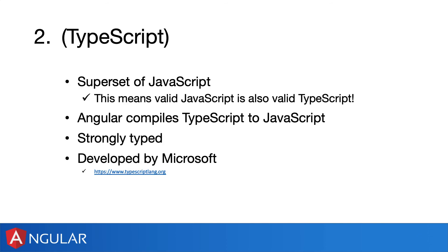Now let's talk about TypeScript because that is the way to code in Angular. In the past, in previous versions, Angular was using pure JavaScript, and now they've moved towards TypeScript for very good reasons. The important thing is to know that TypeScript is actually a superset of JavaScript, so whatever JavaScript code you see is by default valid TypeScript. Angular compiles TypeScript to JavaScript — that process is also called transpiling — because browsers don't actually have a specification for TypeScript; what they have implemented is JavaScript.